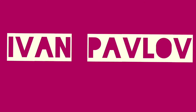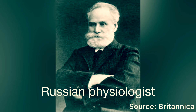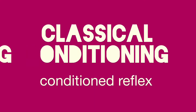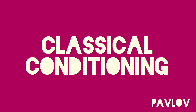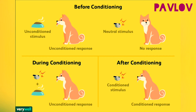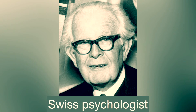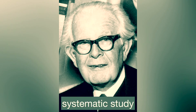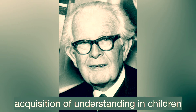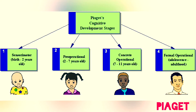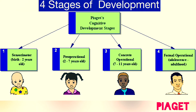Ivan Pavlov. He's a Russian physiologist known chiefly for his development of the concept of the conditioned reflex, also known as classical conditioning. He used a dog for his experiment. Jean Piaget. He's a Swiss psychologist who was the first to make a systematic study of the acquisition of understanding in children, also called Piaget's theory of cognitive development. He came up with four stages of development.